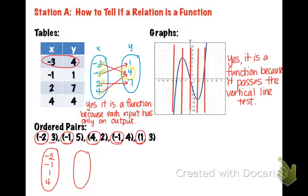Then for the outputs, we're going to look at all the y values: two, three, four, and five. So again, to decide where to put our arrows, we're going to look at one ordered pair. Negative two goes with positive three. Negative one goes with five. Four goes with two. Negative one goes with four. And positive one goes with three. So we can see right here,